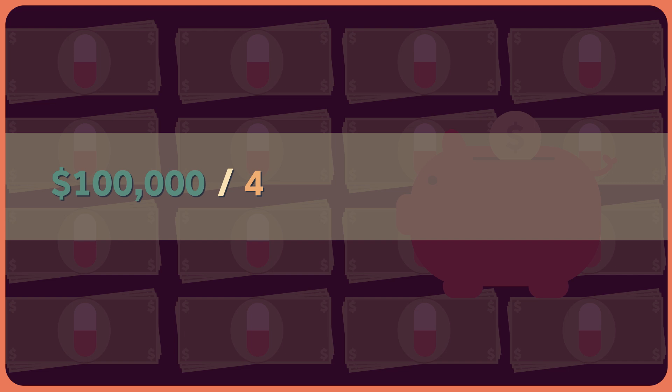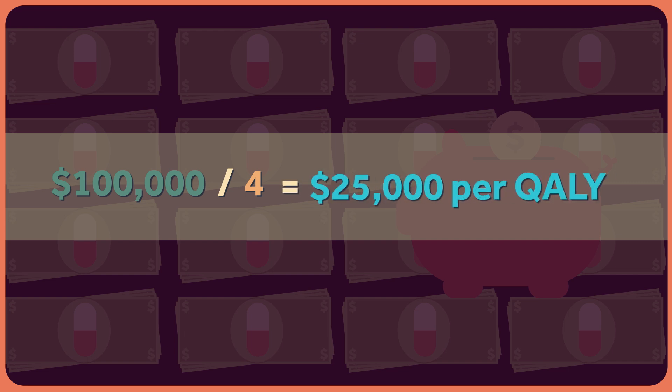If I was cured today, I'd have 40 years of perfect health, or 40 QALYs. I've gained 4 QALYs. And if the treatment costs $100,000, then the cost-effectiveness would be $100,000 divided by 4 QALYs, equals about $25,000 per QALY. That's pretty cost-effective.